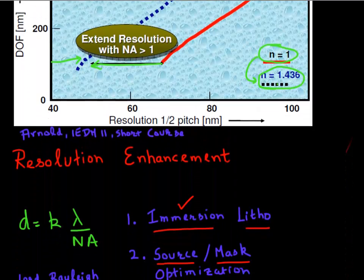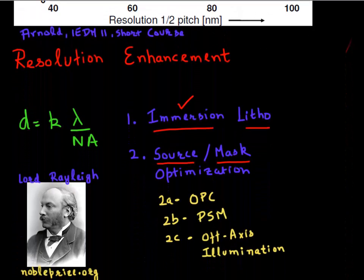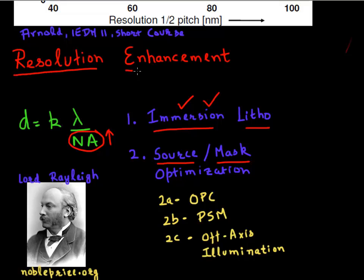Let's come back to our good friend Lord Rayleigh and his equation. We can check out immersion lithography, which is essentially a way to increase your numerical aperture. What else can we do to improve or enhance our resolution? The next set of resolution enhancement techniques I want to talk about essentially concern reducing K, or allowing you to operate at a lower K.